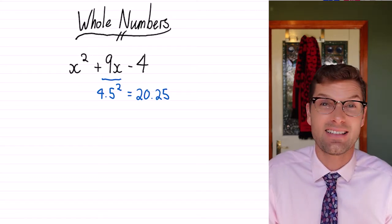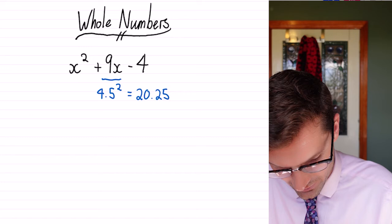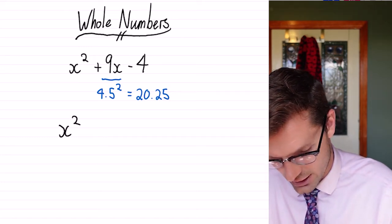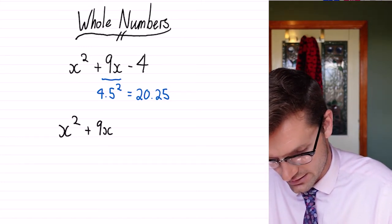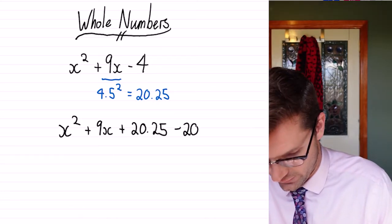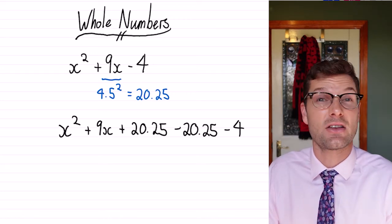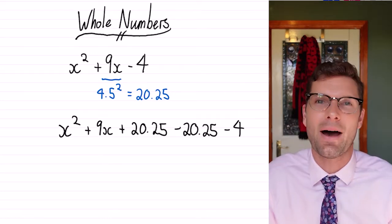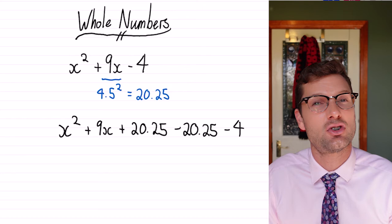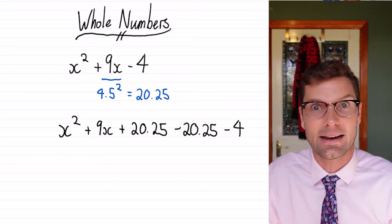So my first step is to make this perfect square and subtract it straight away. So I've got x² + 9x + 20.25 - 20.25 - 4. So that step's exactly the same, but instead of being able to do it in your head, which I'm sure you've been able to do for the even numbers, just throw it in your calculator.